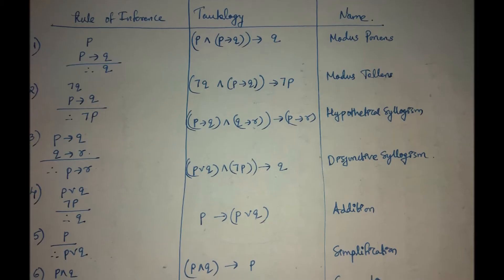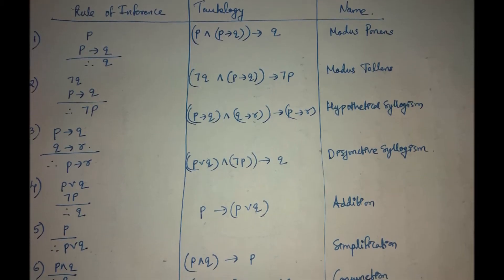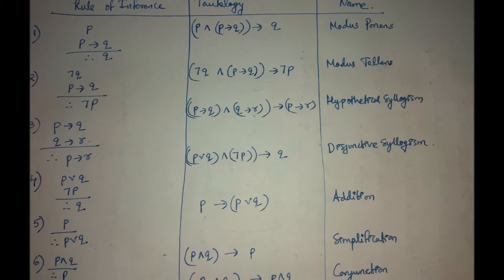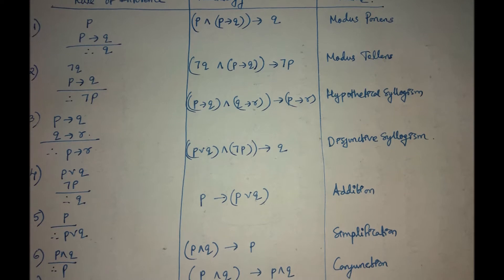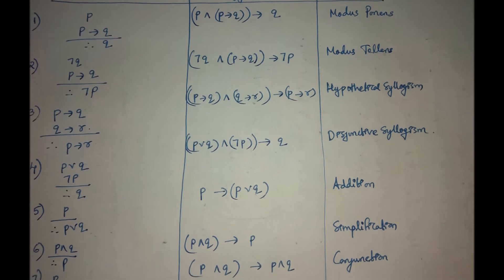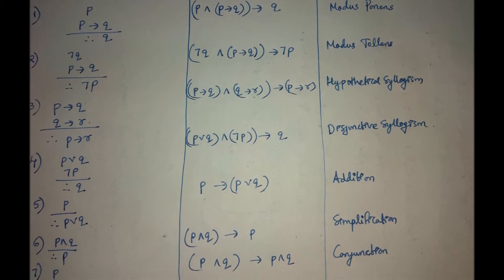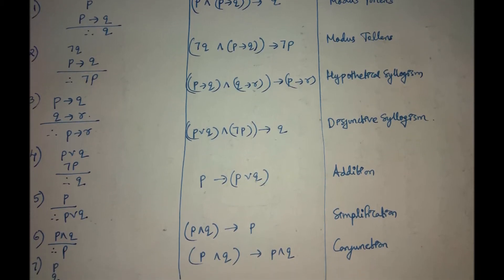Here is a list of rules of inference used in propositional logic, and each rule of inference has a name associated with it.